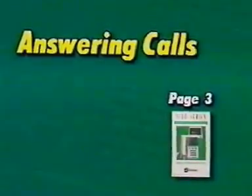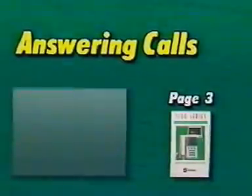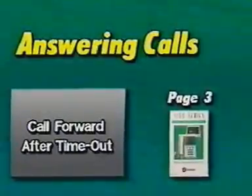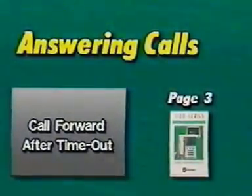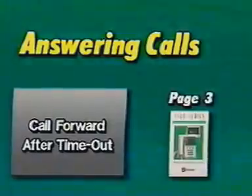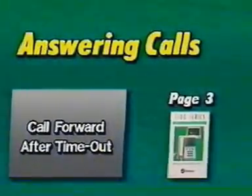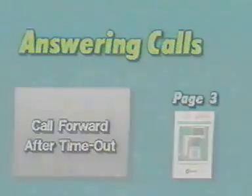Turn to page three to review examples of answering calls. Let's enable the call forward after timeout function. This function forwards calls from an admin phone to another station after the call goes unanswered for a predetermined time. To enable the call forward after timeout function, lift the handset, press pound, seven, one, star, then hang up.